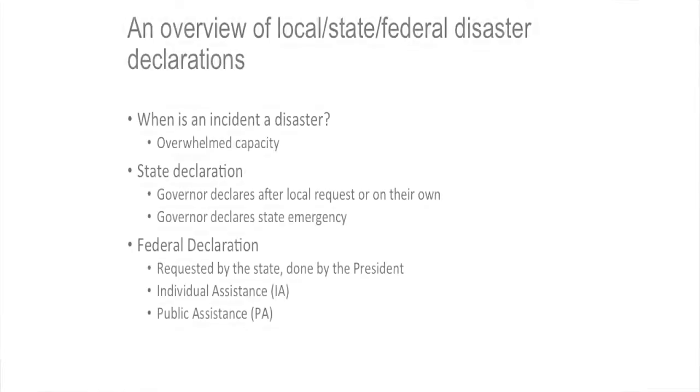Moving on from ICS — state, local, federal disasters and disaster declarations. The definition of a disaster is when you overwhelm your capacity. So it's not a disaster tonight because it snowed an inch — we're used to dealing with that. In Georgia it might be a disaster. If it snows two feet it might become a disaster: we actually need outside forces, we've got to call in contractors and loaders. It might not be a disaster that anybody else cares about, and we might not seek a state declaration — we just handle it, but it's not our day-to-day routine capacity.